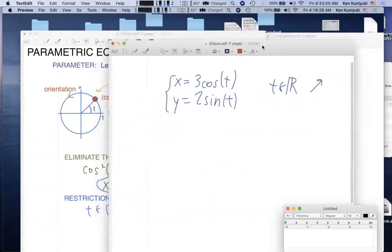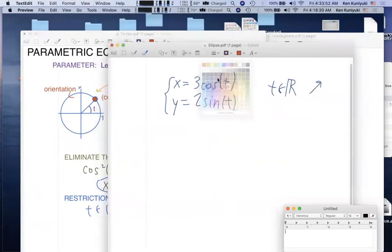Now, let's solve for cosine of t and sine of t. So we get cosine of t equals x over 3 here, sine of t equals y over 2.